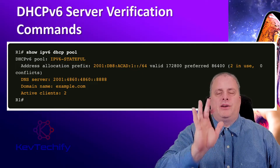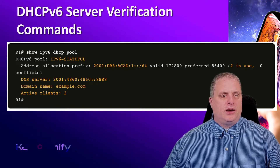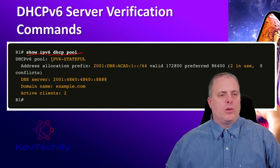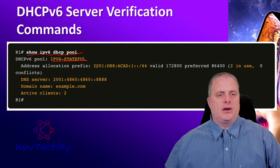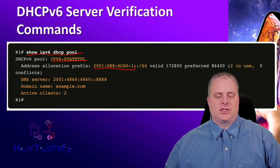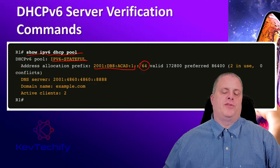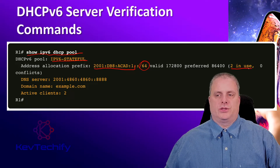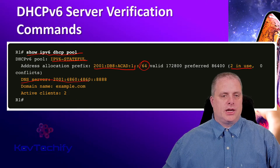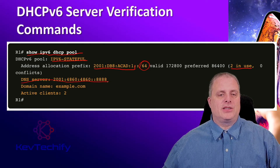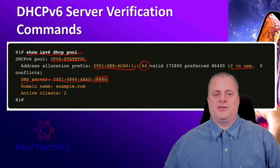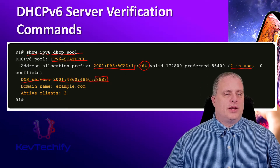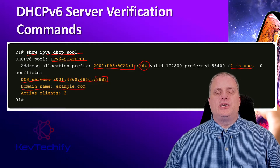On your router, you can verify your DHCP version 6 server by using the command show IPv6 DHCP pool. It's going to list out any pools we have. It'll show the prefix information — our first 64 bits with a slash 64 to signify our prefix is only 64 bits long. We can see that we have two addresses in use. Down here is our DNS information — this is our DNS server on our network. This kind of mirrors Google's free DNS server, which is set at 8.8.8.8.